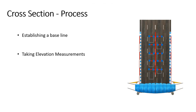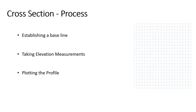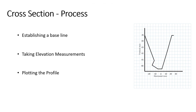Additional measurements may be taken for features such as buildings, utilities, or natural elements. The final step is plotting the cross section — the measured data is then plotted on graph paper or entered into specialized software. The resulting diagram provides a detailed view of the land features and elevations along the surveyed line.